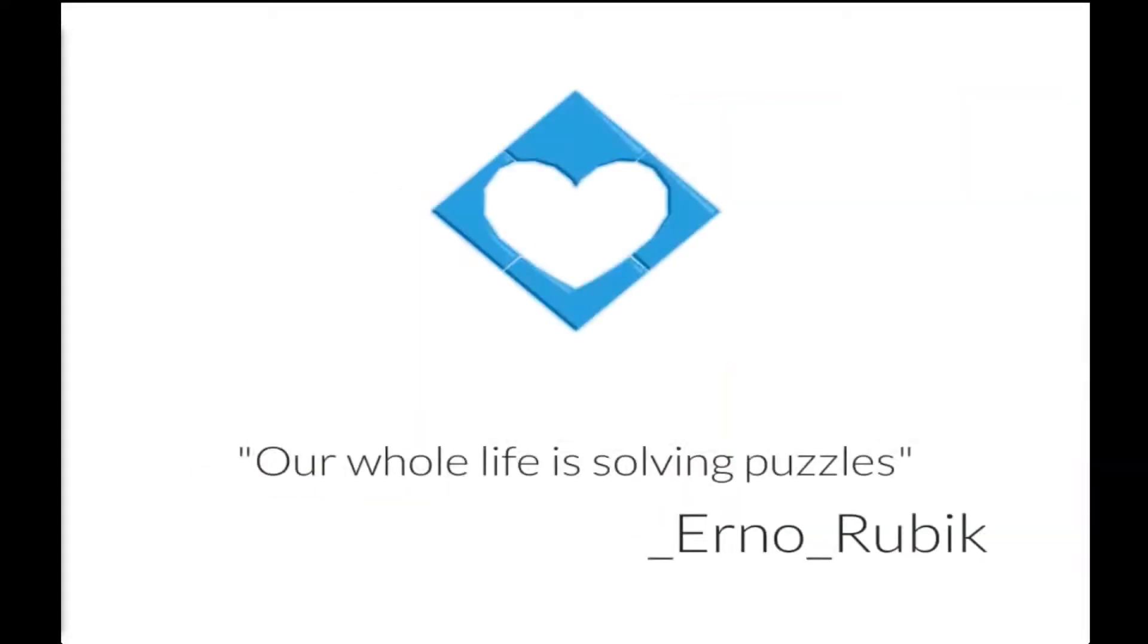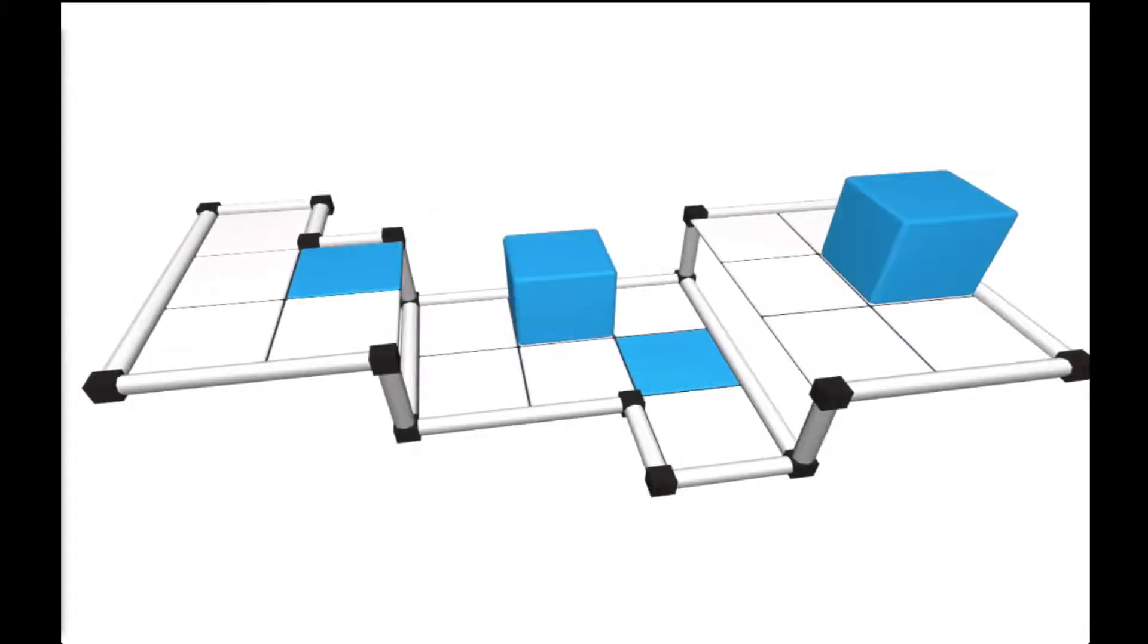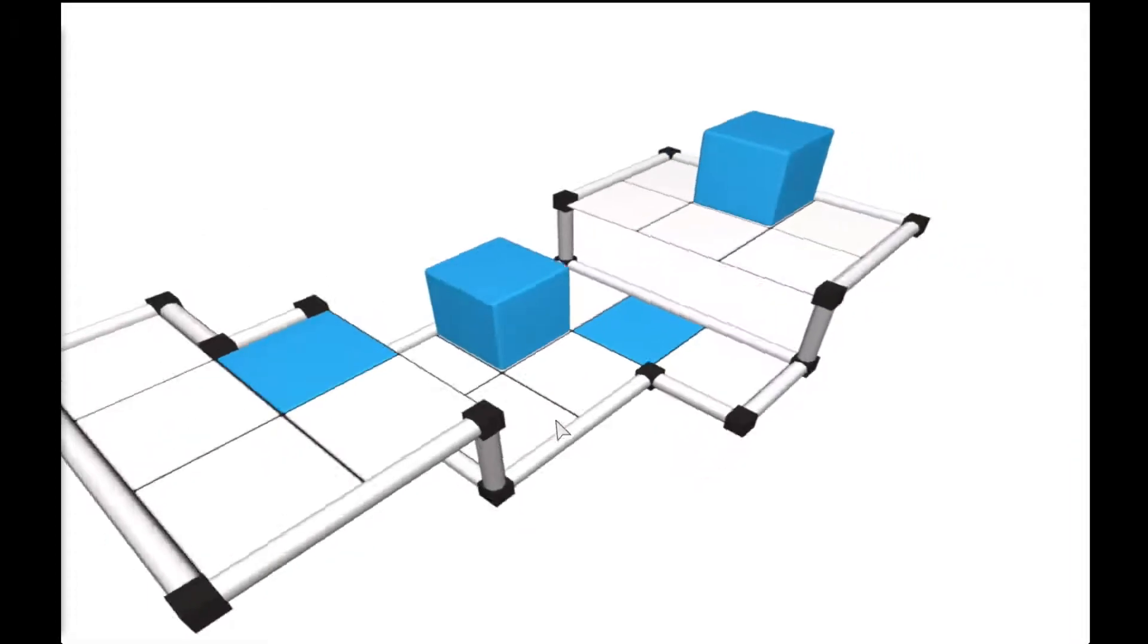So this world, level 1 dash whatever, is pretty easy, pretty calming. There's only one real mechanic, and that is the blue tiles and the blue cubes. Now let's see. Once you fall down, you can't go back up.